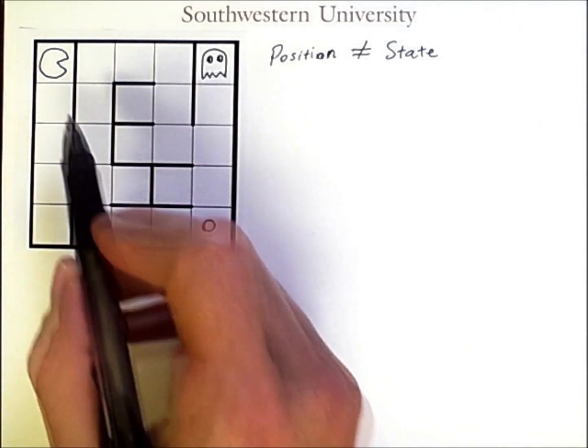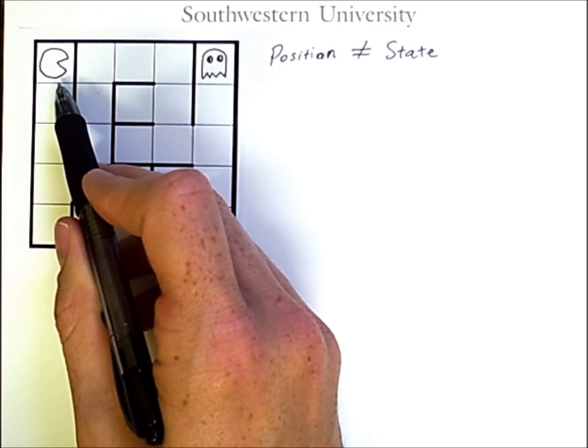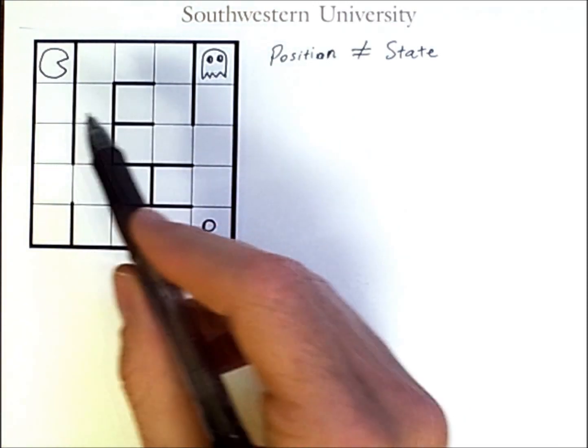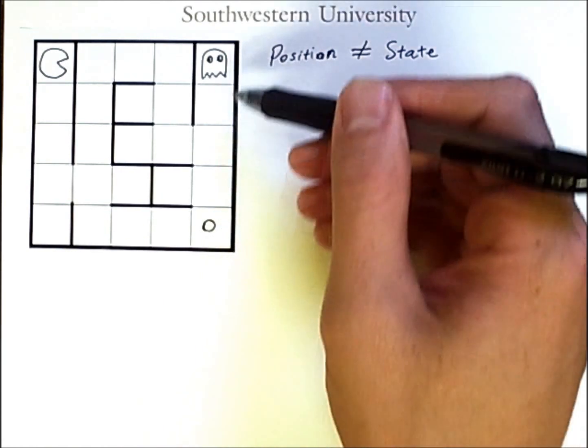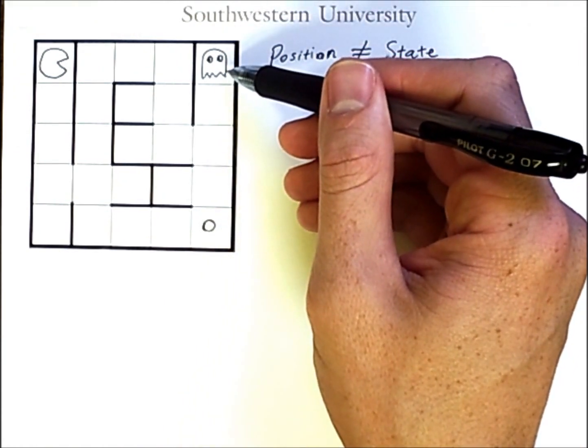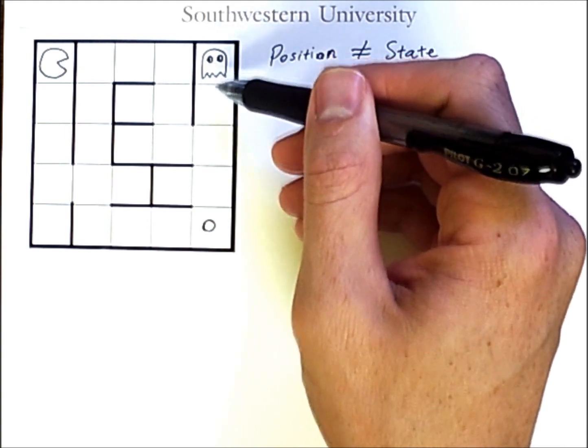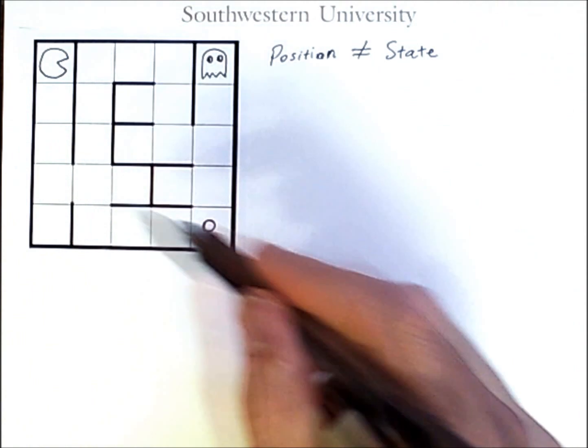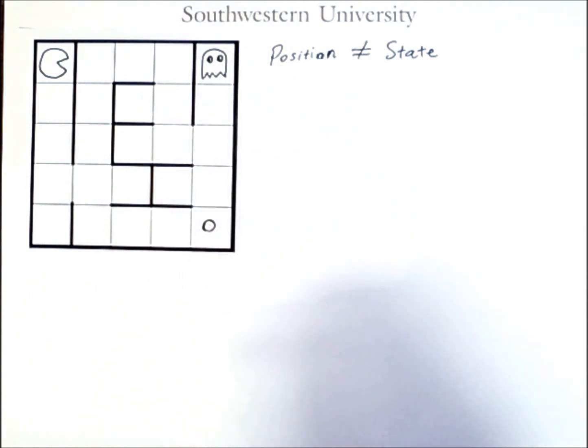For example, consider a problem where you want to have an algorithm control a Pac-Man agent, and you want it to eat this power pill, and then be able to eat this ghost. However, if the ghost meets up with Pac-Man before Pac-Man reaches this power pill, then the ghost will kill Pac-Man. So, it's an adversarial problem.